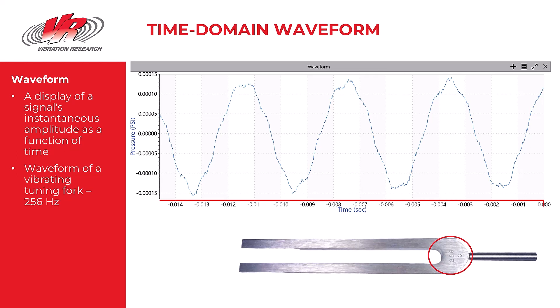The first time domain waveform is from a vibrating tuning fork, a tuning fork with a labeled frequency of 256 hertz. Note the simplicity of the waveform — it's close to a pure sine tone. When you examine the time domain waveform, you can tell that the time from one peak to another peak, one cycle,